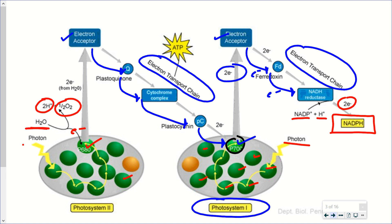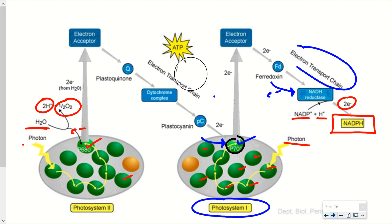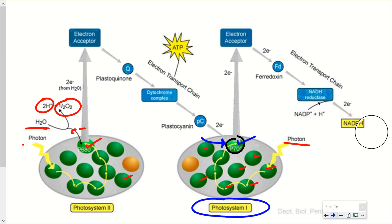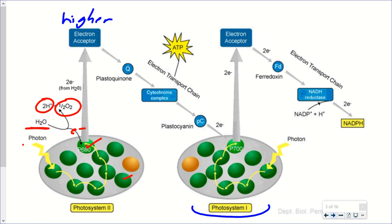Something else is also taking place as these electrons are being passed down through the electron transport chain — they are in fact losing energy. Energy cannot be created or destroyed; it can only be transformed from one form to another. So as those electrons are passed down the line, initially they have higher energy and down the line they have lower energy. The same applies in the second portion: higher energy at the start and lower energy at the end. So what is that energy used for?